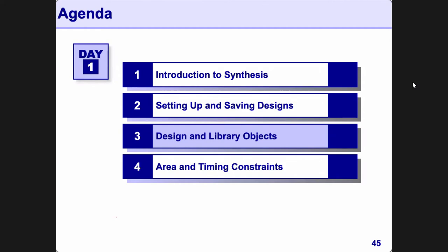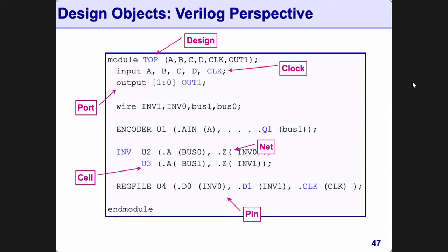Let's look at design library objects. In a Verilog file you have: a top module — this is the design object; input/output ports, one of which may be a clock; wires which are nets — nets tie a port to a pin or a pin to a pin; and you have cells. For example, encoder is a Verilog module that you instantiate with a given instance name — that instance is what we call a cell. And these modules have pins.